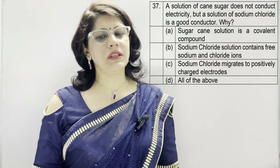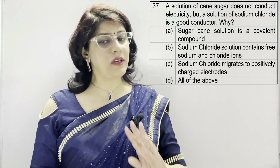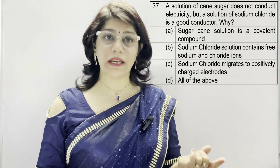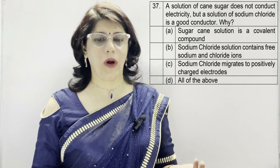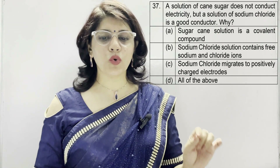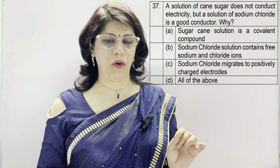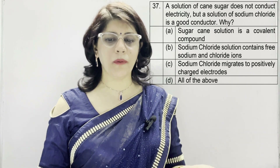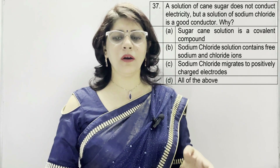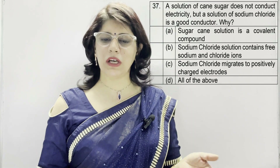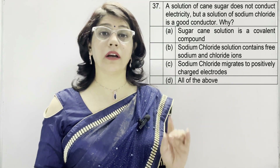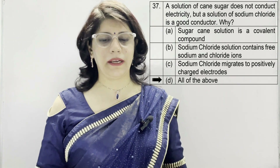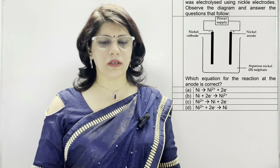Question number 37: a solution of cane sugar does not conduct electricity, but a solution of sodium chloride (NaCl) is a good conductor. Why? A: sugar cane solution is a covalent compound. B: sodium chloride solution contains free sodium and chloride ions. C: chloride ions migrate to positively charged electrodes. D: all of the above. The correct option is D — all of the above, because all three options are correct.